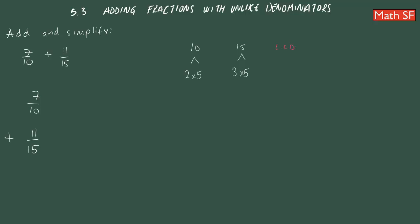The LCD between numbers, so we need to take one list. In this case it's 2 times 5. So 2 times 5. And now...